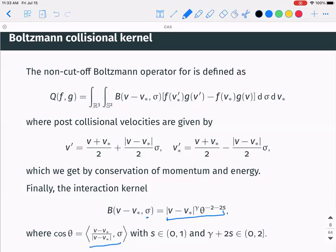The interaction kernel looks like |v - v*|^γ times a θ-singularity of the form θ^{-2-2s}, where θ is the angle between the vector σ and v - v*. We allow s to be anything between 0 and 1, and γ + 2s between 0 and 2 — this is the moderately soft potentials regime. We are allowing singularities in γ or in |v - v*| and also in θ.